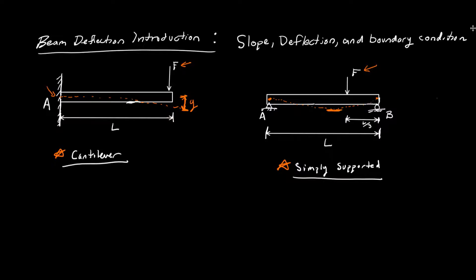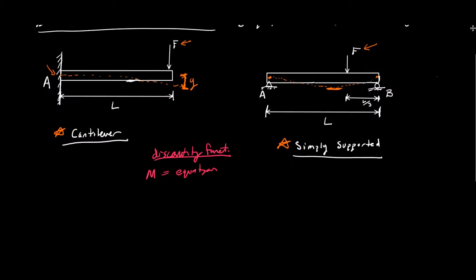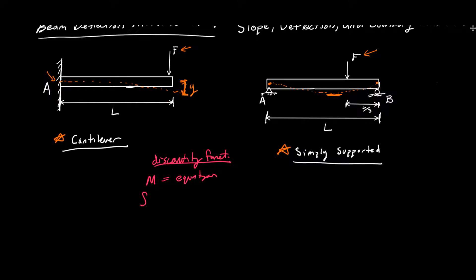There are a couple of different ways to do it. The first way is using something called discontinuity functions. Using discontinuity functions, we can write one moment equation M for the entire beam. Once we have our moment equation, we can integrate it once and get an equation for the slope of the beam.